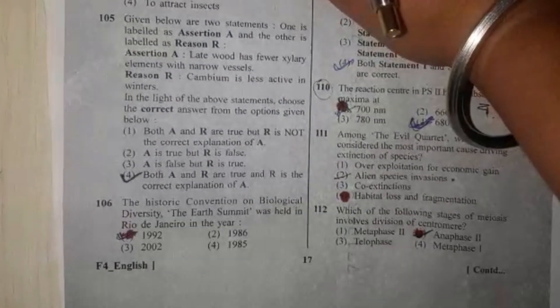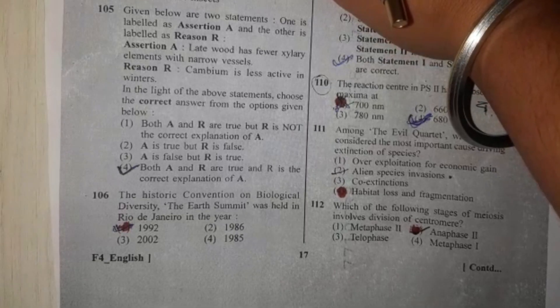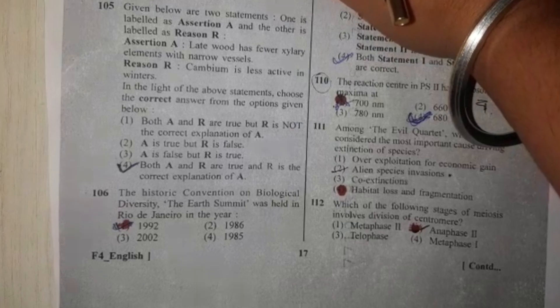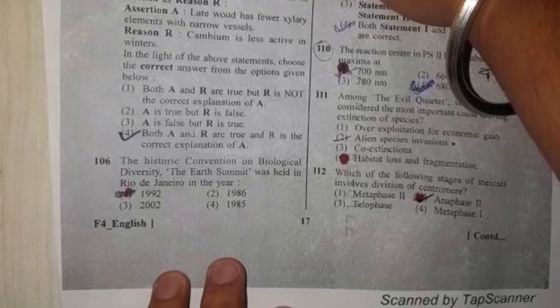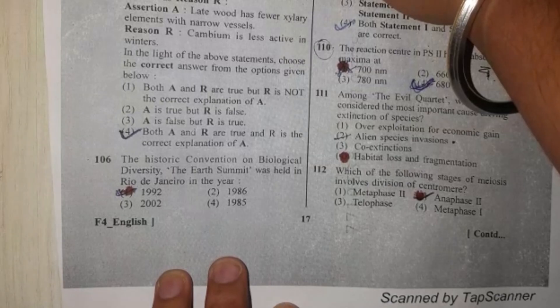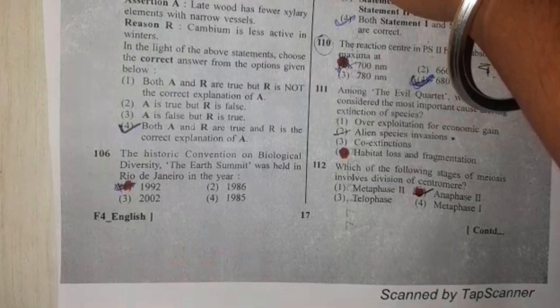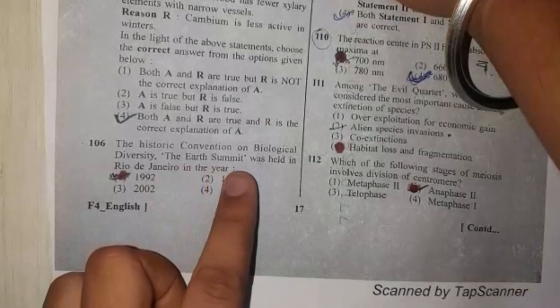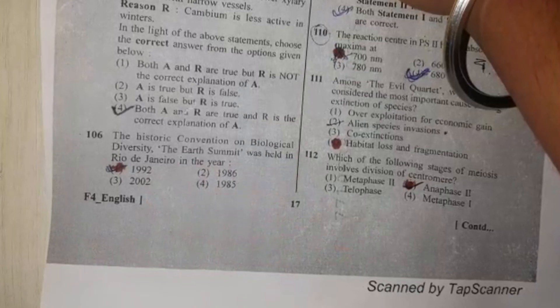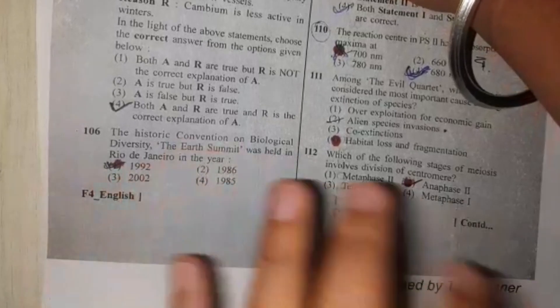Next question is: The historic Convention on Biological Diversity, the Earth Summit, was held in Rio de Janeiro in which year? It was held in Rio de Janeiro in the year 1992.